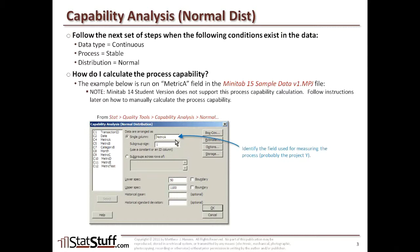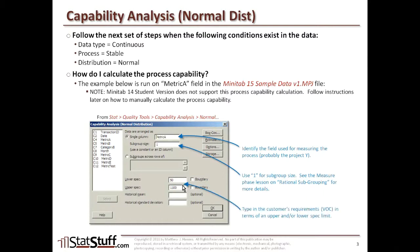First, you're going to enter the actual field you'll be doing analysis on — typically your project Y. In our example from the sample data set, we're going to be using metric A. You're also going to identify the subgroup size — use 1 as the subgroup size typically, but select a different number if you have a different subgroup size. If you want more information about rational subgrouping, go to the measure phase lesson. Finally, enter the lower and upper spec limits. Based on the voice of the customer, here we've identified 50 as the lower spec limit and 1100 as the upper spec limit.